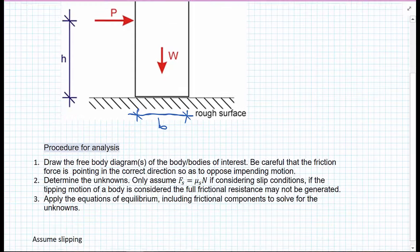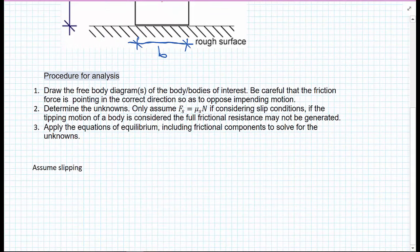The procedure for analysis: we draw the free body diagram of the bodies of interest, and we're careful that the friction force points in the correct direction so it opposes any impending motion. We determine the unknowns.